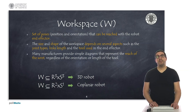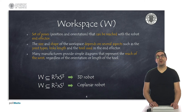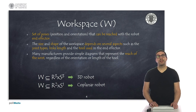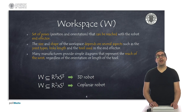Many manufacturers provide simple diagrams that represent how far the robot wrist can reach, but they do not consider the orientation or the length of the tool. This diagram that they provide, in most cases, is only indicative of the areas where the robot can work. Obviously, the robot controller knows exactly if a specific position can be reached, and if it is reachable it will move the robot to that position.